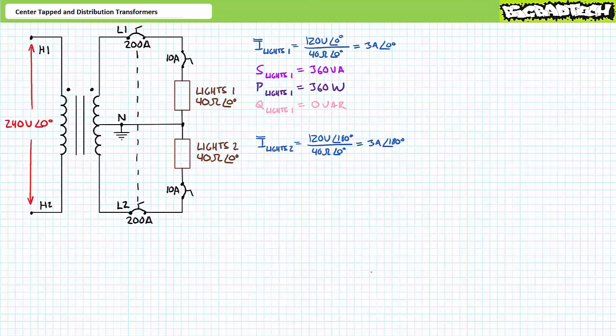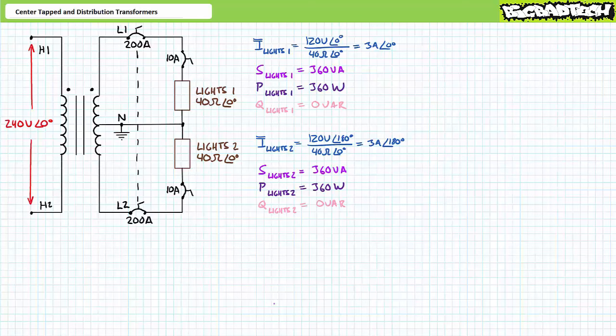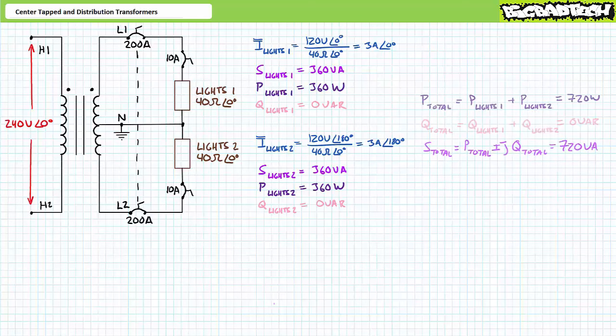Similarly, an application of Ohm's law demonstrates the second lighting load draws 3 amps at an angle of 180 degrees — equal in magnitude yet perfectly out of phase with the lighting load on L1. A subsequent application of the AC power formula demonstrates the second lighting load also consumes 360 volt amperes of apparent power, of which 360 watts is directed towards real power and zero vars towards a reactive interchange. In totality, this system is supplying 360 plus 360, or 720 volt amperes.